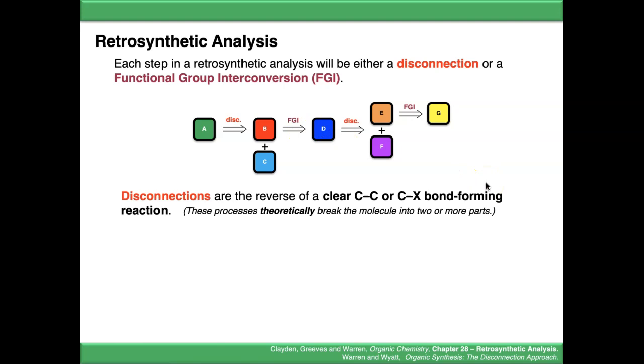Disconnections are the reverse of a clear carbon-carbon or carbon-heteroatom bond-forming reaction. All of these processes theoretically break the molecule into two or more parts. You can see A has been disconnected into molecules B and C. We've broken it into two discrete parts.